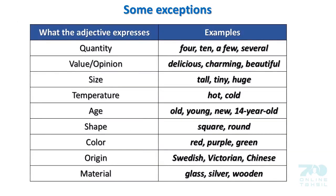What the adjective expresses: Quantity — four, ten, a few, several. Value/opinion — delicious, charming, beautiful. Size — tall, tiny, huge. Temperature — hot, cold. Age — old, young, new, 14-year-old. Shape — square, round. Color — red, purple, green. Origin — Swedish, Victorian, Chinese. Material — glass, silver, wooden.